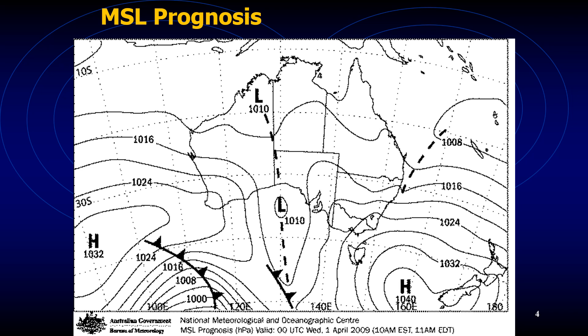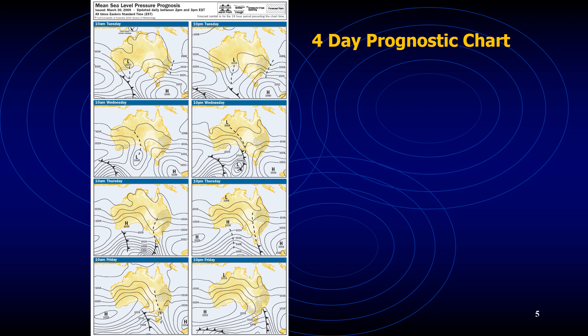The analysis charts provide the current weather scenario and the prognosis charts provide a future weather scenario, useful for planning. As you can see, this prognosis chart is labeled at the bottom of the chart; the pressures are denoted and it is very similar to analysis charts, but provides a future scenario with a validity period.